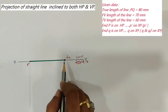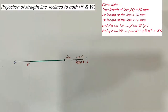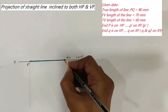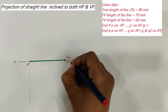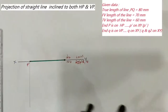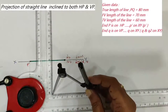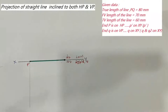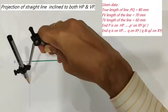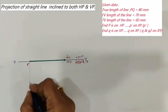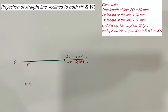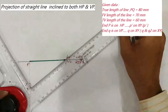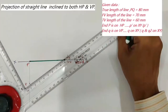P'–Q2' is the apparent length in the front view. For the true length in the top view, this point becomes the starting point. So Q2 as a center, with the true length of 80mm as a radius, draw an arc on this projector. Name this point P. Then join P and Q2 — this is the true length in the top view.